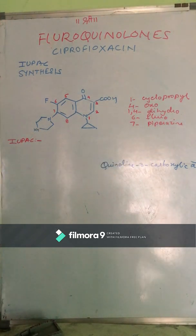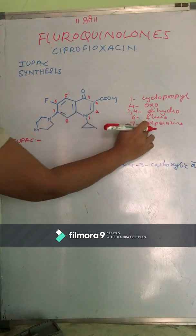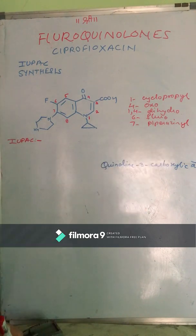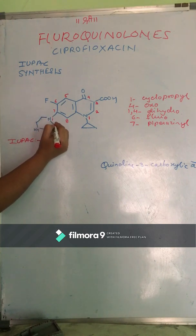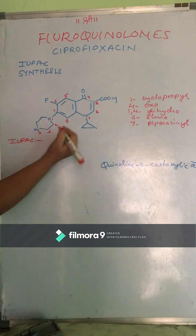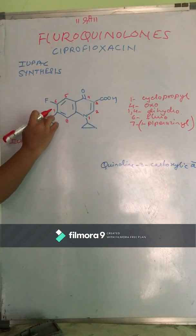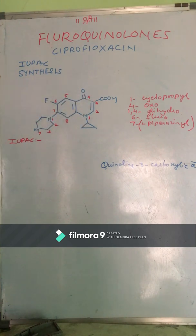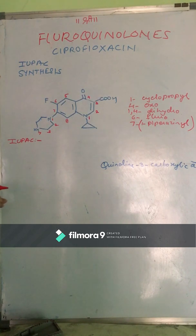This piperazine ring is now in substituent form, so instead of piperazine we write it as piperazinyl. This piperazine ring is attached at the first position of the piperazine ring to the seventh position of the drug. Now we will arrange all these substituents in alphabetical order relative to the root name.